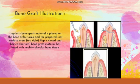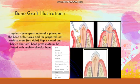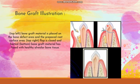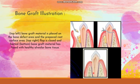We can see the bone graft illustration. In the top left figure, we can see the bone graft material is placed on the bone defect area and the prepared surface area. In the next figure, the bone graft is closed. And in the bottom figure, we can see the bone graft material has fused with healthy alveolar bone tissue.